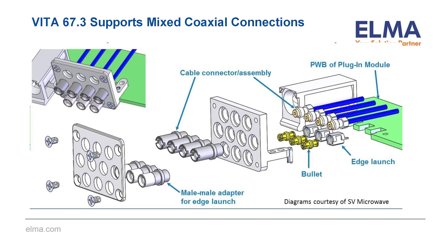This is an example of two different types of contacts that can be used on Vita 67.3 apertures. In the upper right-hand corner, you can see four cable assemblies that would be snapped into the top row. Below that, you see edge-launched contacts that might be used to launch directly from a mezzanine and/or a base card. This shows the flexibility designers have when designing for Vita 67.3 connector modules.